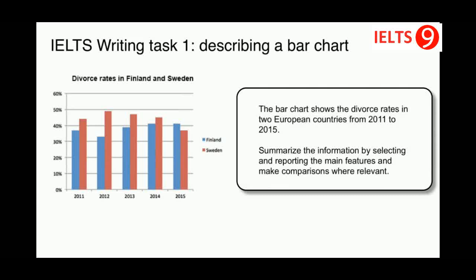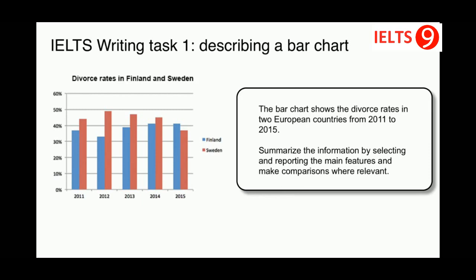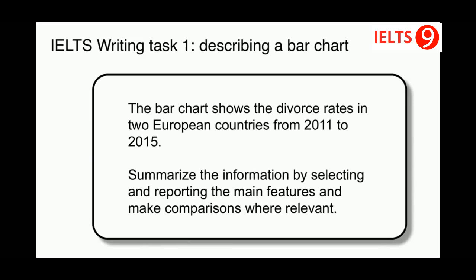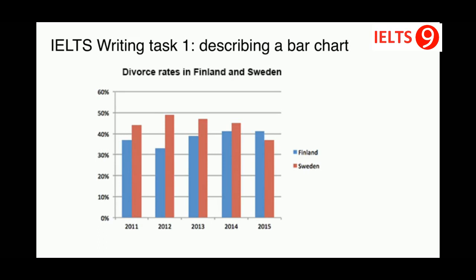Here is an example of a writing task 1 question with a bar chart. You have a bar chart and a question card with some basic information about your chart. The first thing you need to do is to read this information attentively. The bar chart shows the divorce rates in two European countries from 2011 to 2015.